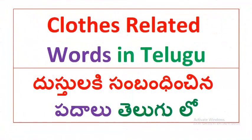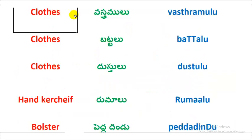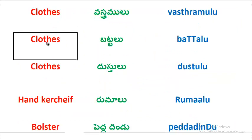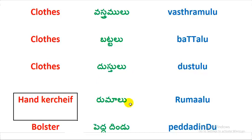Okay friends, without further delay we will start the topic. Plots — Vastramu. Plots — Buttaloo. Plots — Dustaloo. Handkerchief — Roomalu.